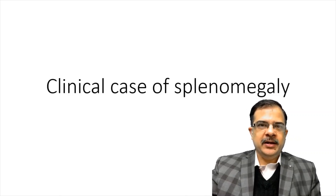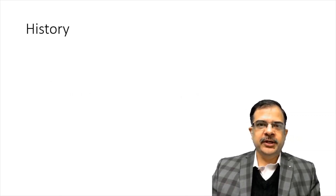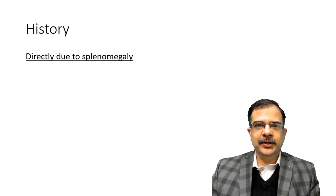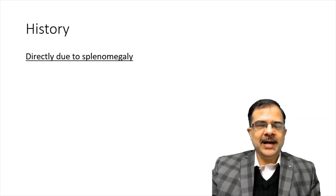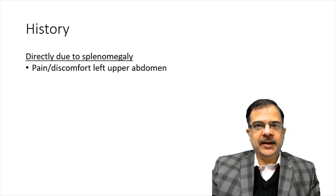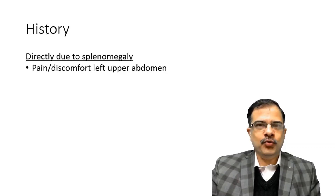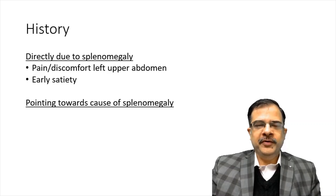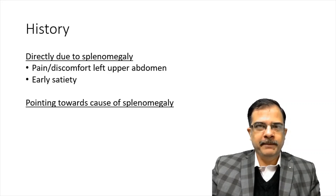In the clinical history, the first history of presenting complaint we will be asking is directly related to the splenomegaly. The most common symptom directly related to the splenomegaly is pain or discomfort in the left upper quadrant of the abdomen, as well as feeling of early fullness. We will also be asking the points which will help us in making an etiological diagnosis.